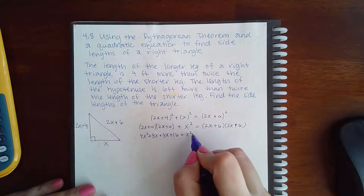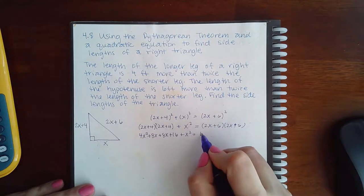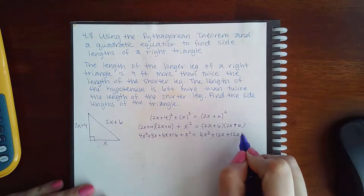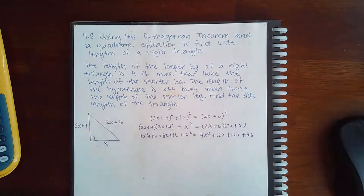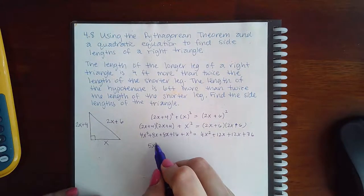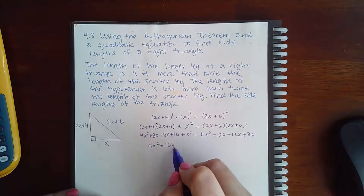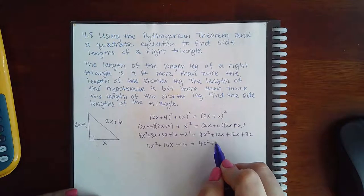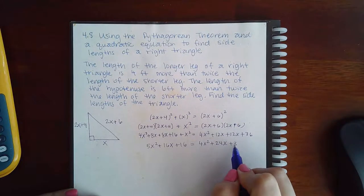Bring down the plus x squared. Here we get 4x squared plus 12x plus 12x plus 36. We'll combine our like terms. So on this side, we get 5x squared plus 16x plus 16. On this side, we get 4x squared plus 24x plus 36.